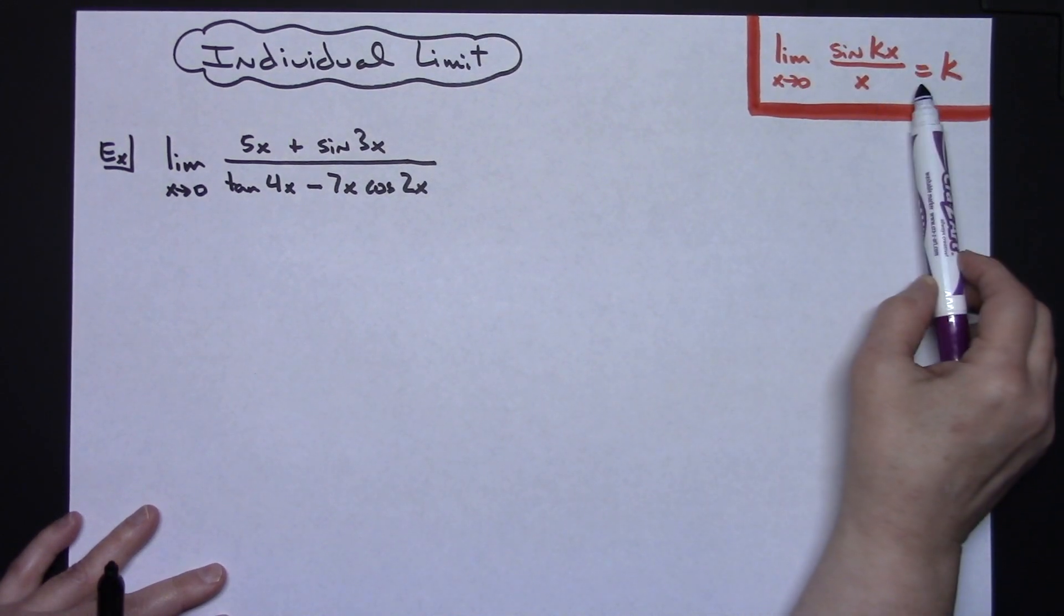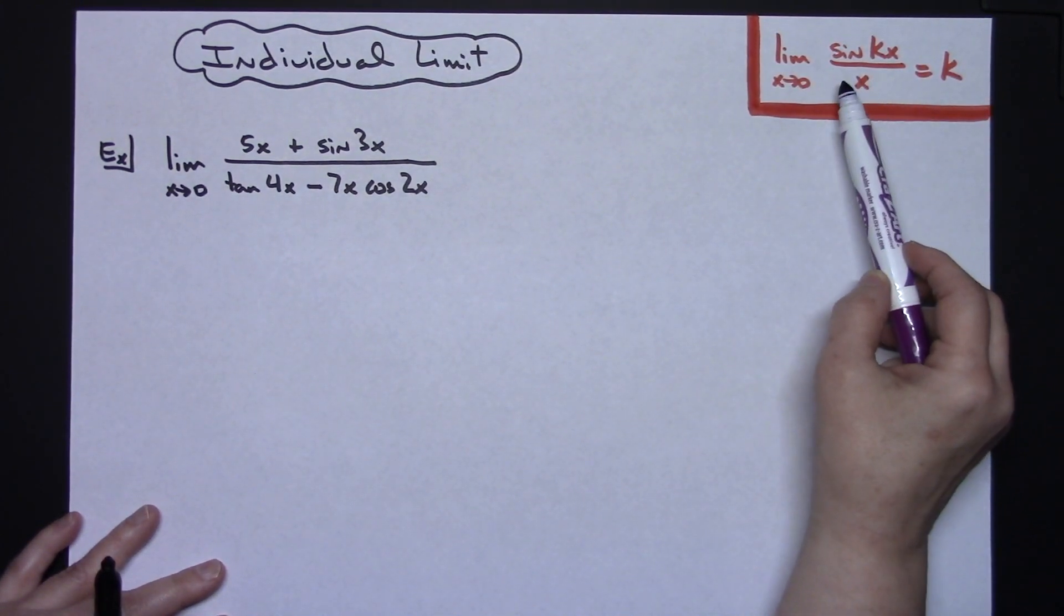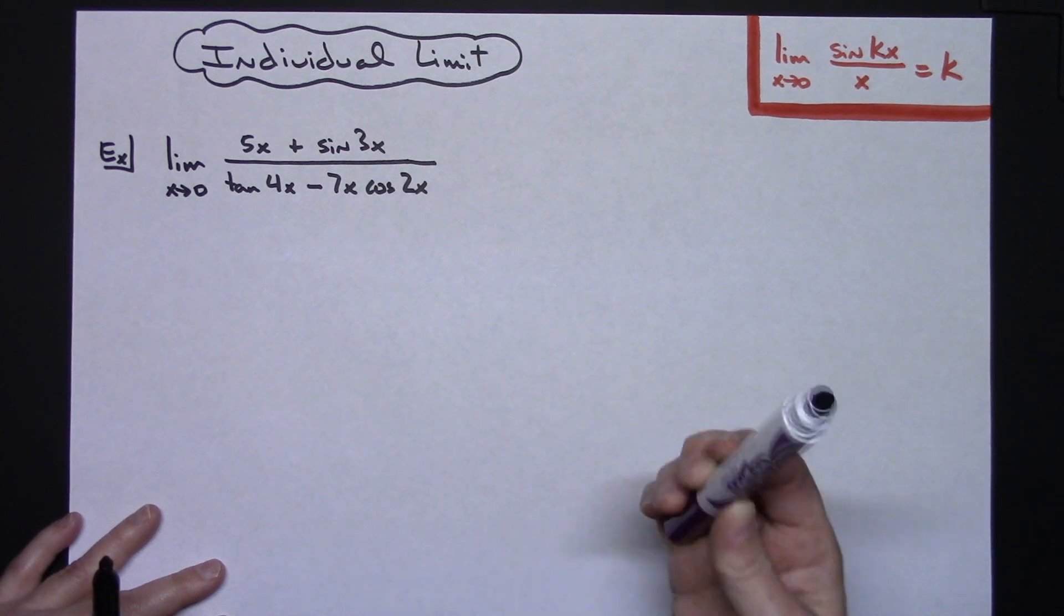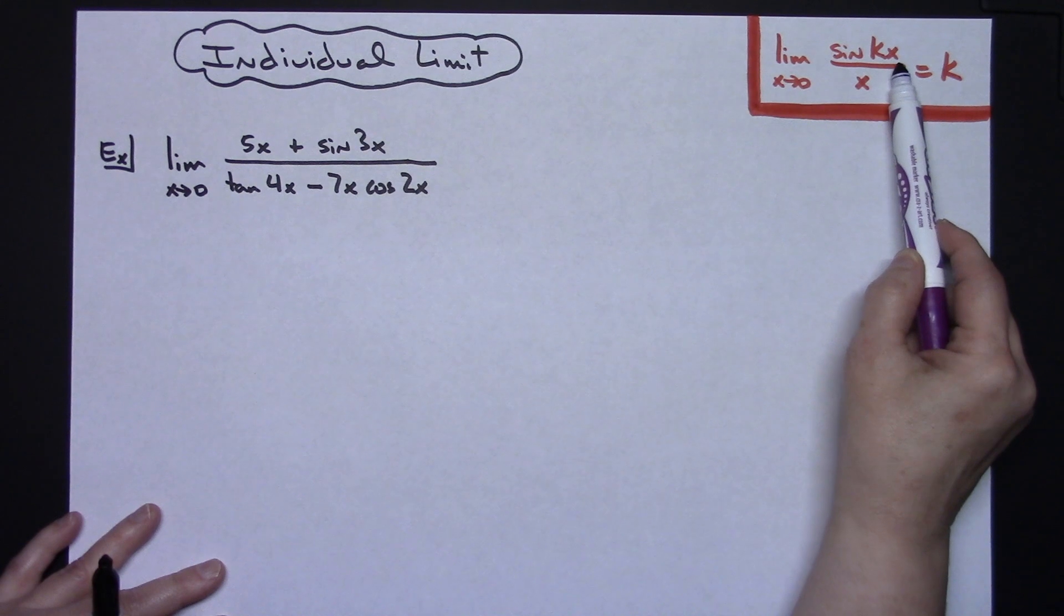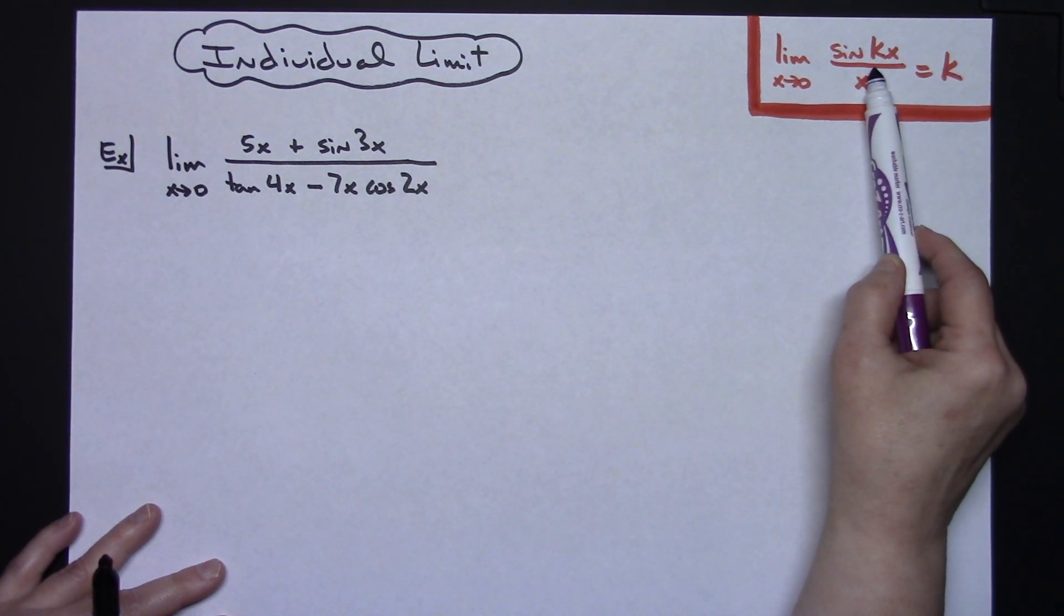I allow my students to use this known limit and then in their algebra steps it makes it a little bit easier if they can manipulate it so that they've got a sine of some number x all over x and they know it's going to go to that number.